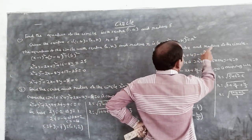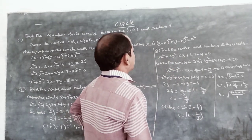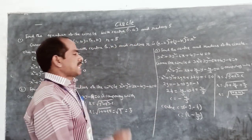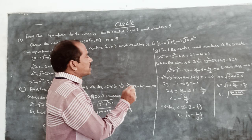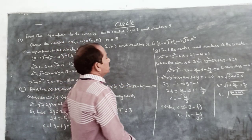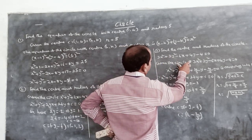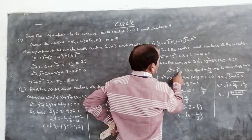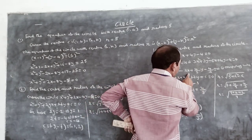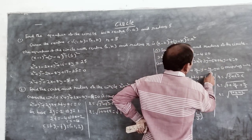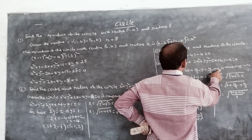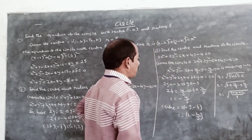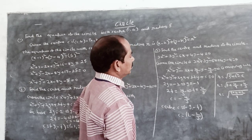Next problem: Find the center and the radius of the circle. 3x square plus 3y square minus 6x plus 4y minus 4 is equal to 0. Dividing throughout by 3: x square plus y square minus 2x plus 4 by 3 y minus 4 by 3 is equal to 0.